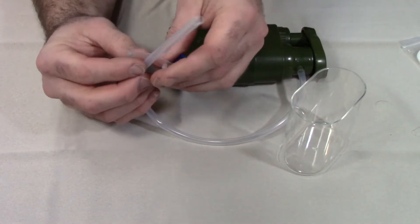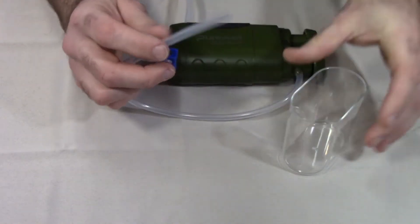Now connect the clip to the other end of the short hose and connect it to the top, which will be your cup.